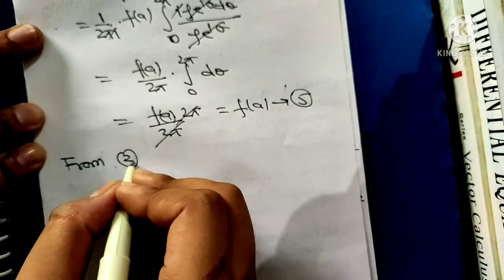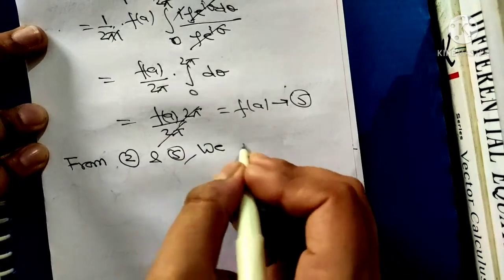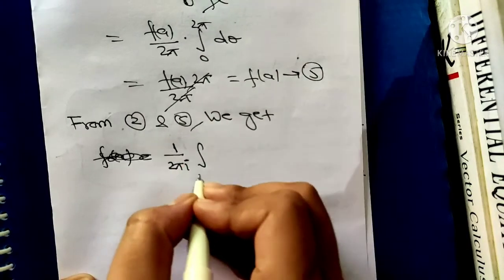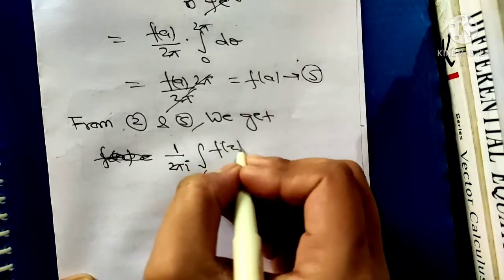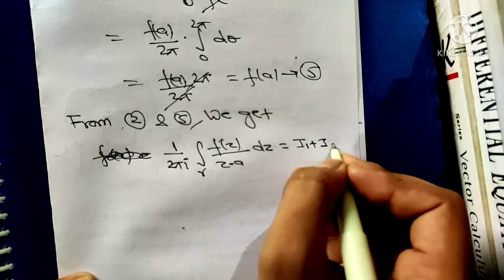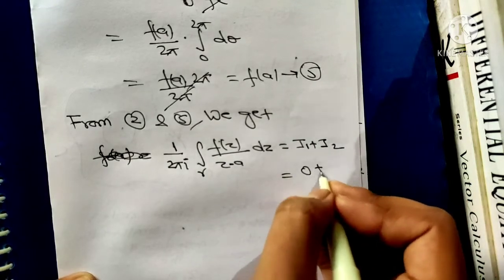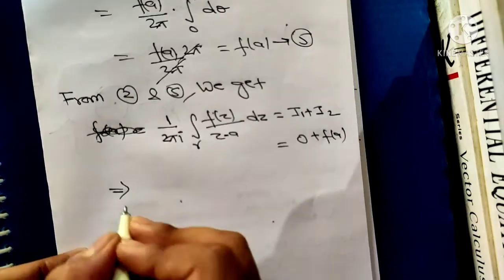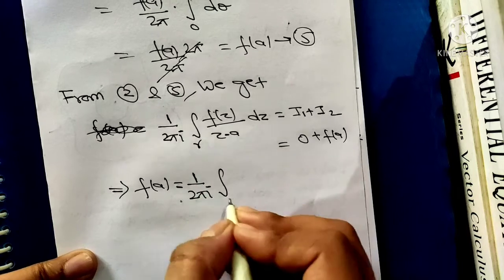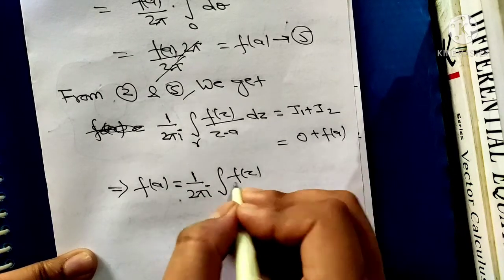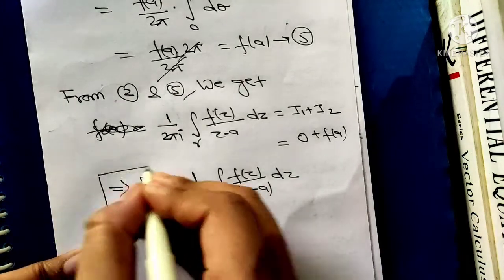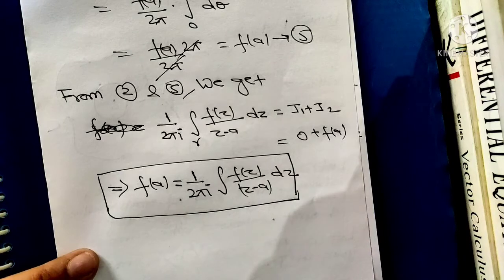From equations 2 and 5, we get 1 upon 2πi times the integral over gamma of f(z) upon z minus a dz equals I1 plus I2. Since I1 equals 0 and I2 equals f(a), this gives f(a) equals 1 upon 2πi times the integral over C of f(z) upon z minus a dz, which is the proof of Cauchy's integral formula.